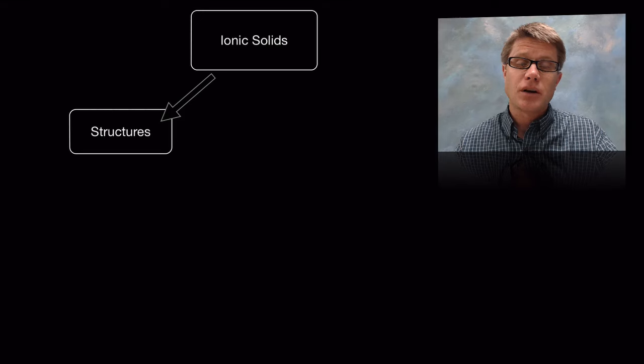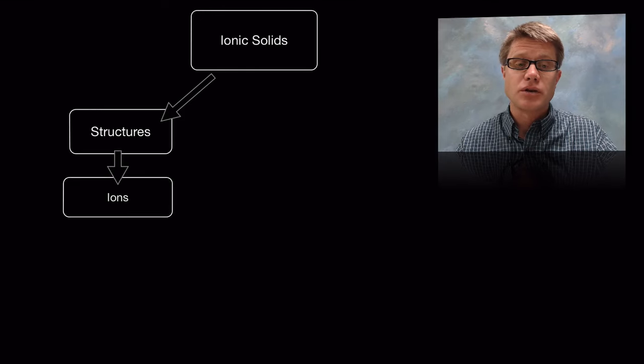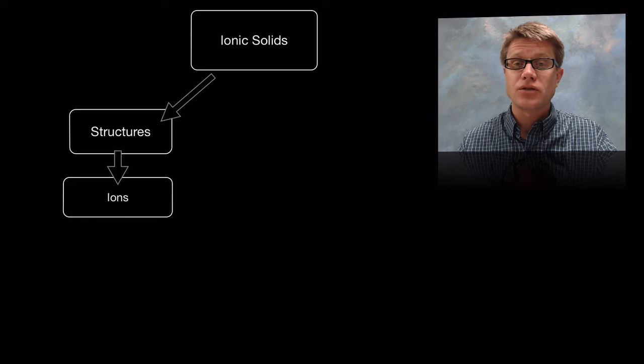Ionic solids are made up of ions, which are atoms that have either gained or lost electrons. They're either cations or anions.